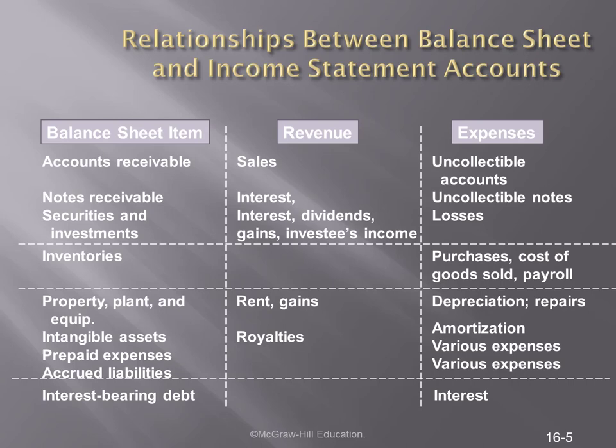Let's spend a few minutes talking about the relationship between balance sheet accounts and the income statement. Accounts receivable relates directly to sales. Inventory relates directly to expenses such as purchasing, cost of goods sold, and supply expense. Property, plant, and equipment affects expenses in the form of depreciation, amortization, and other expenses.